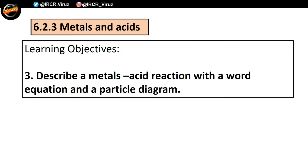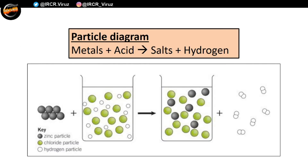Learning objective number three: describe a metal's reaction with a word equation and a particle diagram. We had a look at particle diagrams before — let's have a quick recap. In this particle diagram, we have a metal and an acid as reactants, and the products are a salt and hydrogen. It's represented with little circles in different colours so you can understand the exchange of atoms — the dark gray ones are all zinc particles.